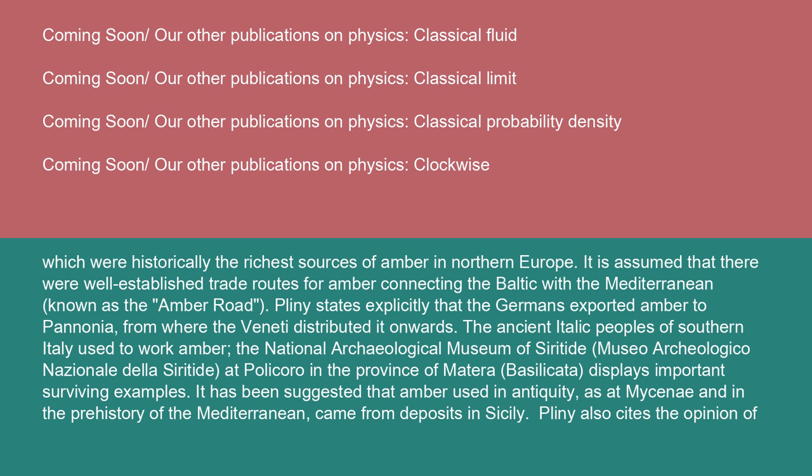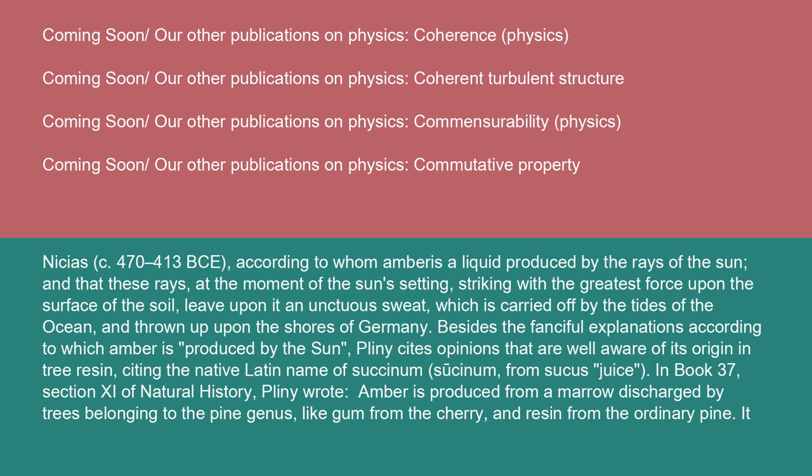Pliny also cites the opinion of Nicias (c. 470 to 413 BC), according to whom amber is a liquid produced by the rays of the sun, and that these rays, at the moment of the sun's setting, striking with the greatest force upon the surface of the soil, leave upon it an unctuous sweat, which is carried off by the tides of the ocean, and thrown up upon the shores of Germany. Besides the fanciful explanations, Pliny cites opinions that are well aware of its origin in tree resin, citing the native Latin name of succinum from succus, meaning juice.